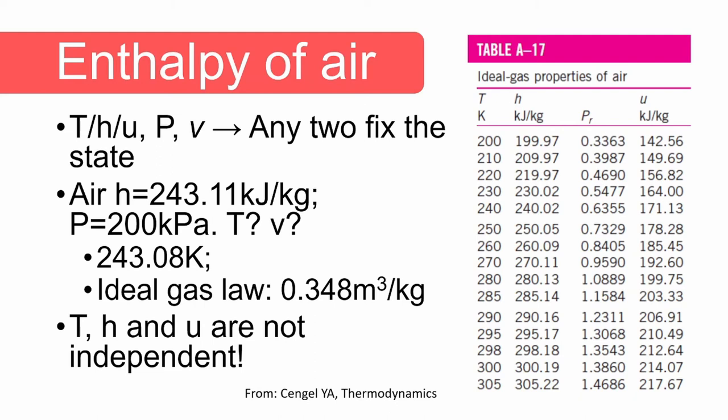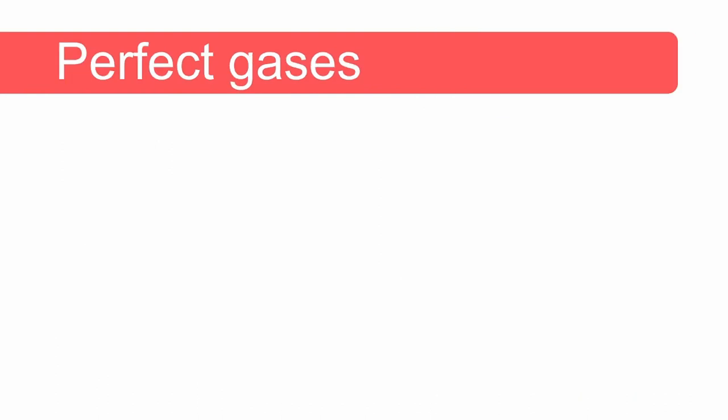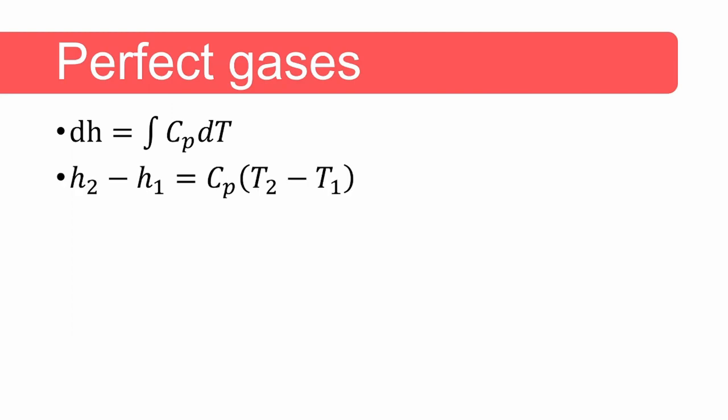Now let's consider a special ideal gas. If the specific heat of an ideal gas does not depend on temperature, we call such a gas a perfect gas. We often assume that helium and other monoatomic gases are perfect gases. For a perfect gas, it is easy to perform the integration of the equation for the calculation of enthalpy. The specific heat can be taken out from under the integral, and under the perfect gas assumption, it is important to note that we can only calculate the change in enthalpy.